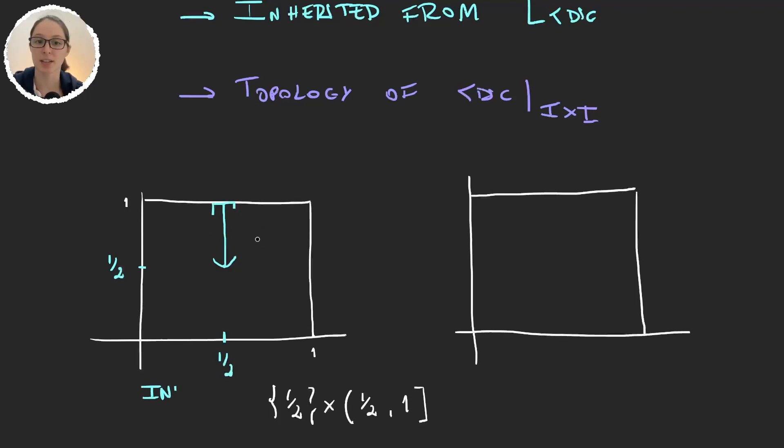But is this set open in the inherited topology? Whenever we work with the inherited topology we have to remember that we are a subspace meaning that there are other sets in addition to the ones we have inside our set.